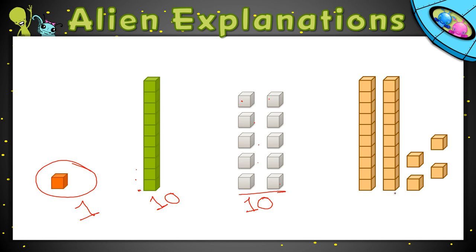Over here, my last example, I have two of my stacks or two of my longs. They have 10 cubes each, and then I have 1, 2, 3, 4 cubes all by themselves.